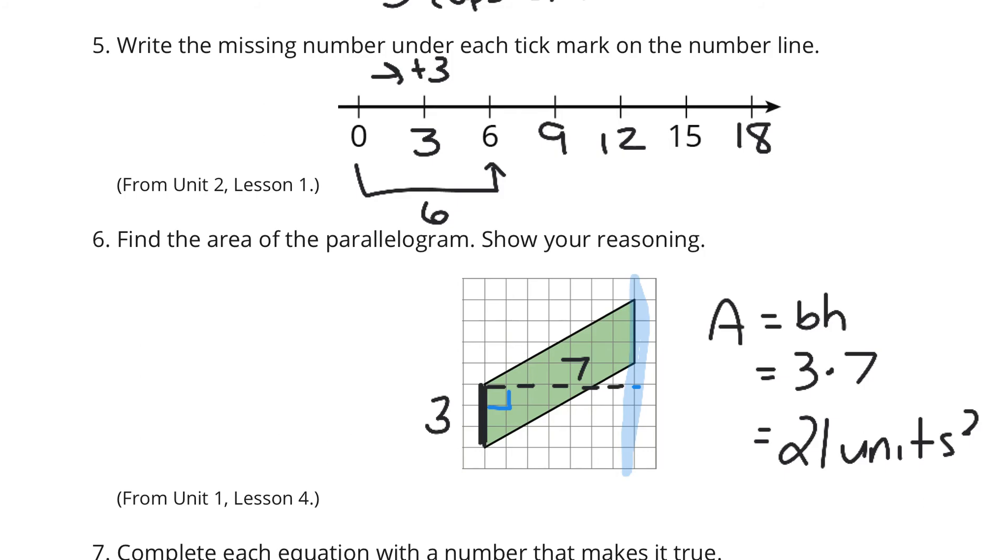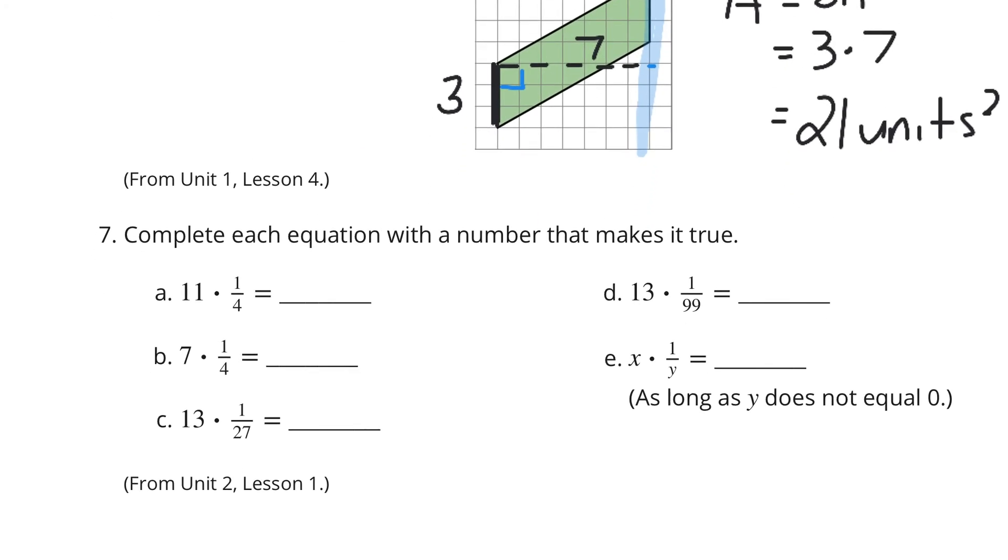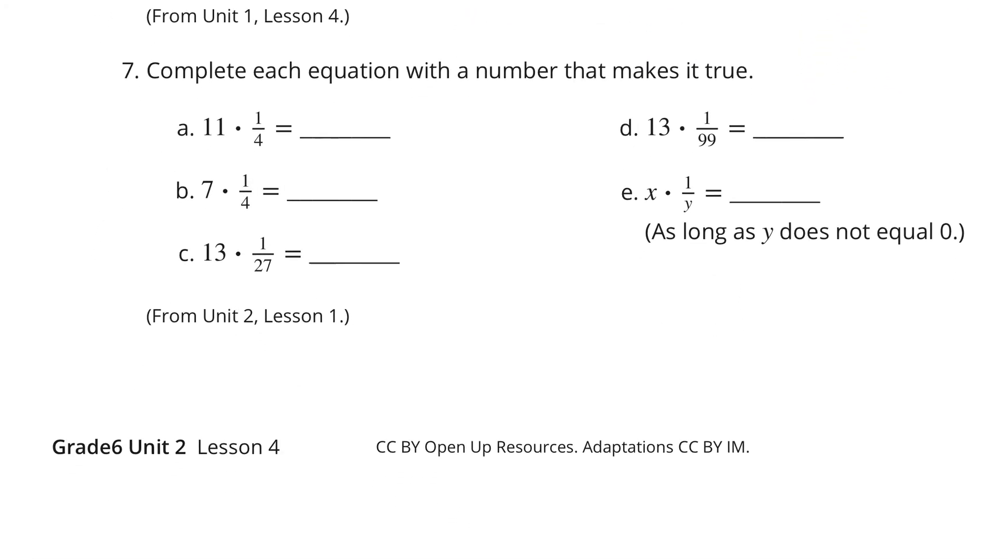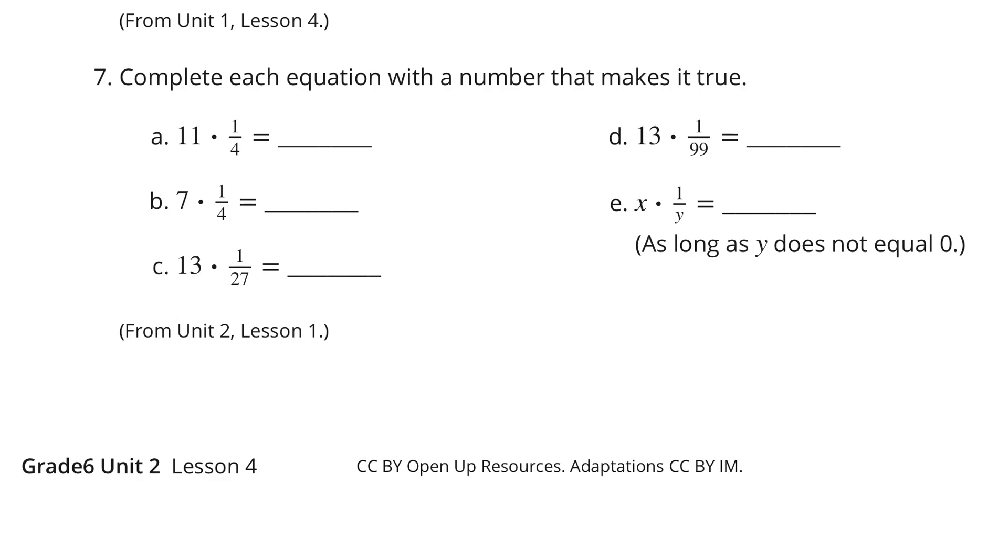Continuing on. Complete each question with a number that makes it true. Eleven times one-fourth is eleven-fourths. Seven times one-fourth, seven-fourths. Thirteen times one-twenty-seventh, thirteen-twenty-seventh. Thirteen times one-ninety-ninth is thirteen-ninety-ninths. And following the pattern, as long as y is not equal to zero, x times one over y is x over y.